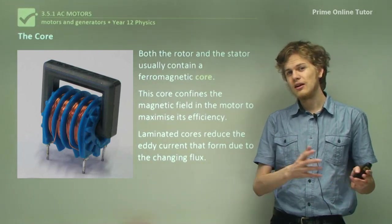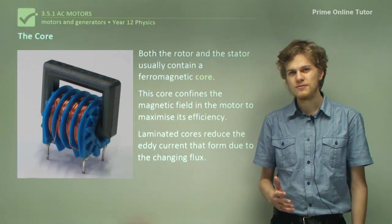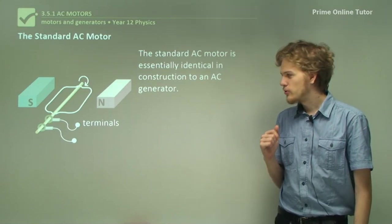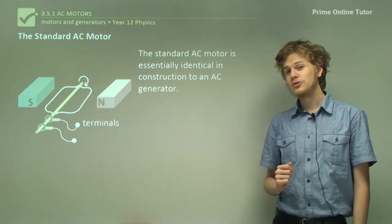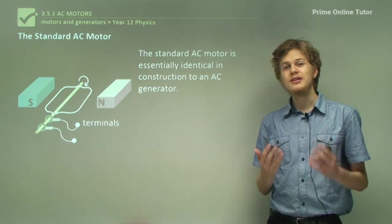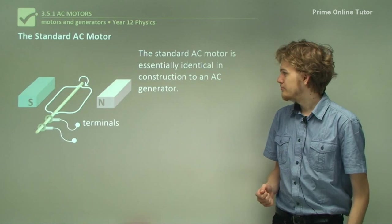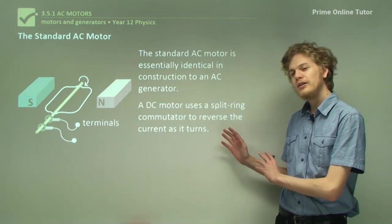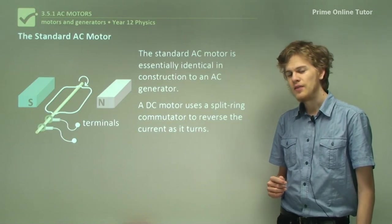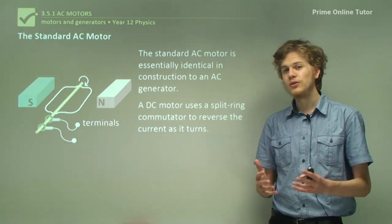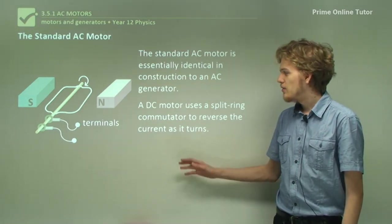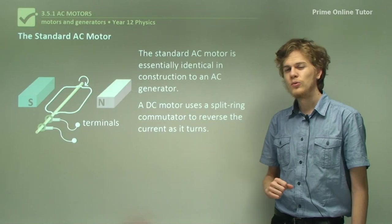Laminating a core means slicing it into many parts and dividing those parts by insulators. Now the standard AC motor looks something like this. It probably looks kind of familiar because we've seen this same diagram in our studies on AC generators. A DC motor uses a split ring commutator to reverse the current as it turns, so current is always passing through the magnetic field in the same direction and the motor always experiences a torque in the same direction. In the case of an AC motor we do something slightly different.